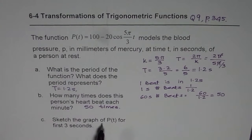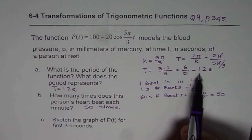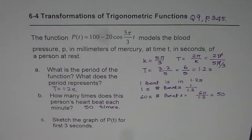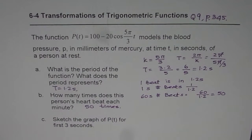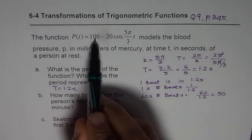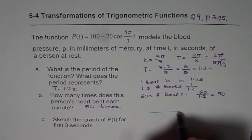Now, the question is, sketch the graph of P(t) for the first 3 seconds. We will have 3 seconds means almost 3 cycles. 1.2 is 1 cycle, so almost 3 cycles. I will use my standard way of sketching the function, starting with the axis, which is 100. So let us say this is our axis.